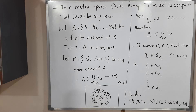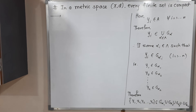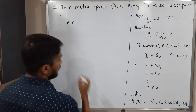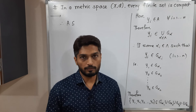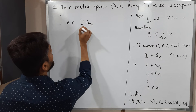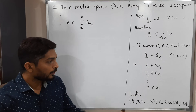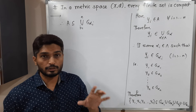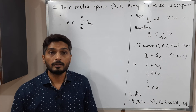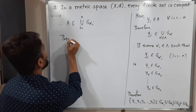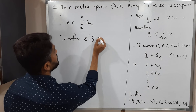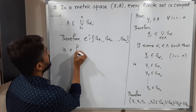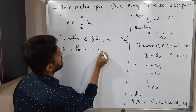Therefore the set {y1, y2, ..., yn} is a subset of G_{alpha_1} union G_{alpha_2} union ... union G_{alpha_n}, since each element belongs to the corresponding set. This is nothing but our set A. So therefore A is a subset of the union of G_{alpha_i} for i from 1 to n. So from the open cover script C we obtained n sets G_{alpha_1}, G_{alpha_2}, ..., G_{alpha_n} which cover A. Therefore script C' = {G_{alpha_1}, G_{alpha_2}, ..., G_{alpha_n}} is a finite subcover of script C for A.